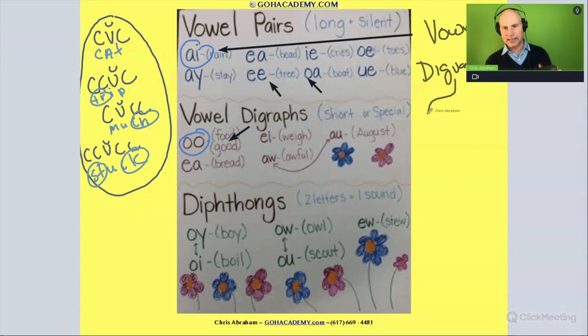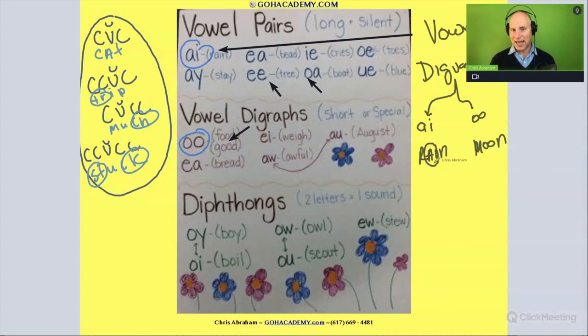Now let's take a look at these two. Let's do the AI in rain. That's one type of vowel digraph. And the OO in moon. That's another type of vowel digraph. Both of these are vowel digraphs. But the AI you'll notice is two vowels that make one sound, and the first vowel is long or the first one says its name. You ever heard that? First one does the talking, second one does the walking. That is a vowel digraph that we sometimes call a vowel pair.